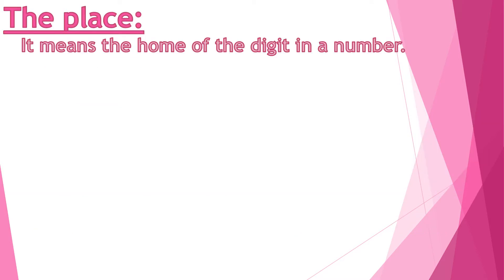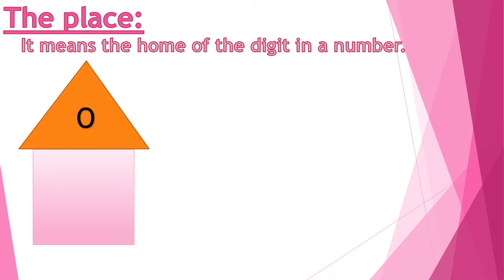First, the place. It means the home of the digit in a number. Each number has a home, and this home is called place. When we were in grade 1, home is one room only. The greatest digit for this room is 9.